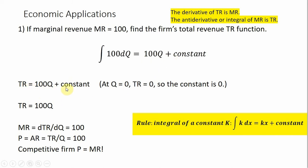Therefore, total revenue equals 100Q plus a constant, but we know something about total revenue: when Q equals 0, total revenue equals 0. So that implies that the constant is 0, and we no longer need to write it. So total revenue just equals 100Q. We can check our answer — if we take the derivative of total revenue, we will get back marginal revenue. The derivative of 100Q is just 100.